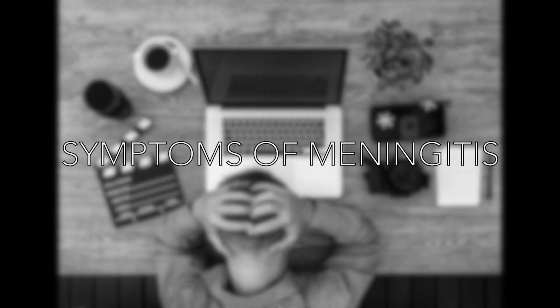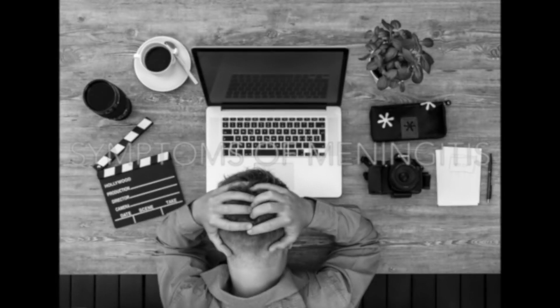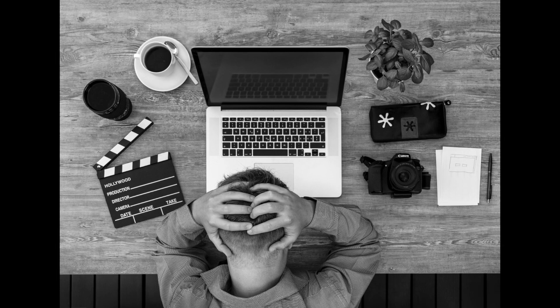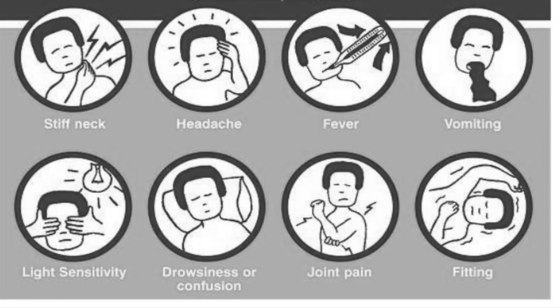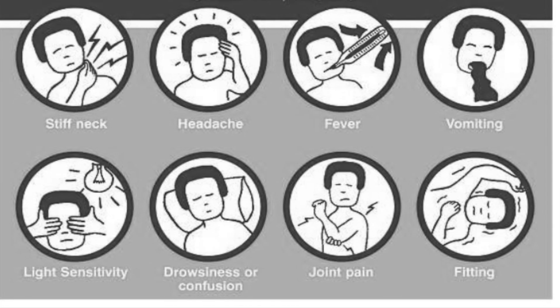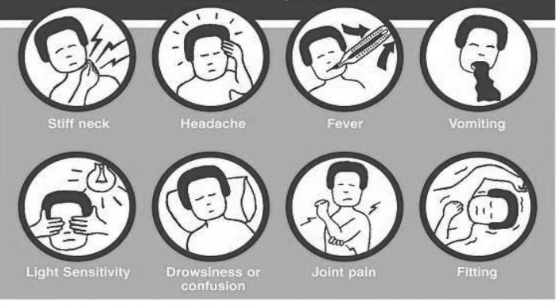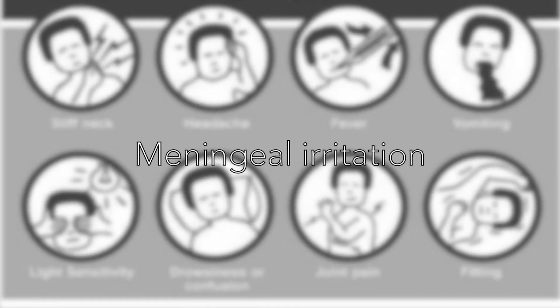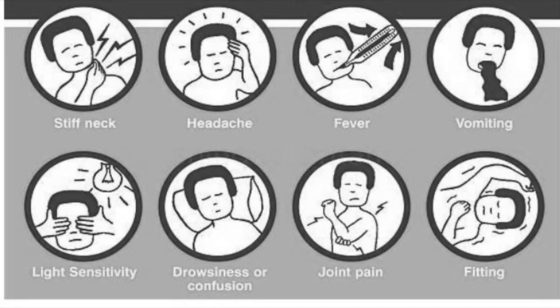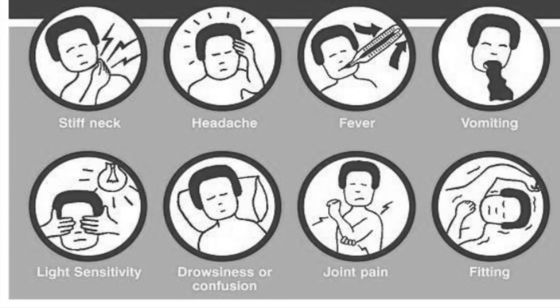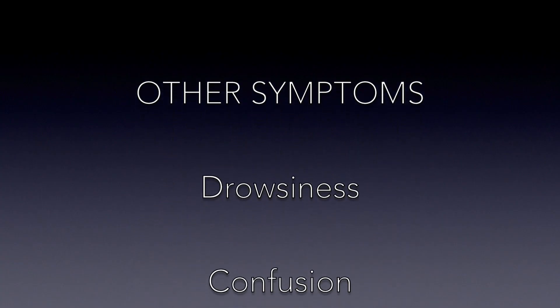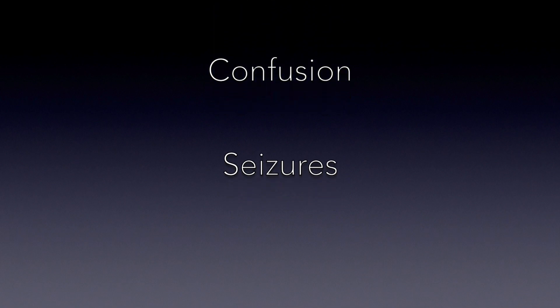So what are the symptoms of meningitis? The classic triad of symptoms is described as headache, neck stiffness and fever. This is due to the meninges which surround our brain and spinal cord becoming inflamed, causing meningeal irritation leading to stiffness in the neck, headaches, as well as sensitivity to light and vomiting. Other symptoms include drowsiness, confusion and sometimes seizures.